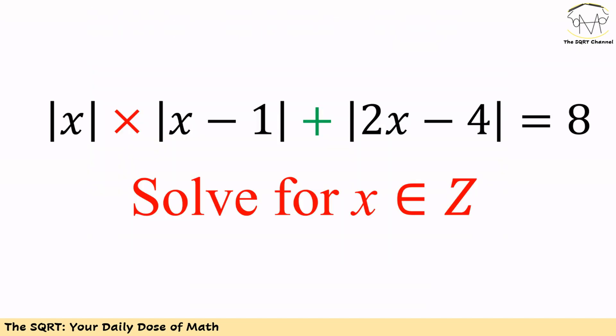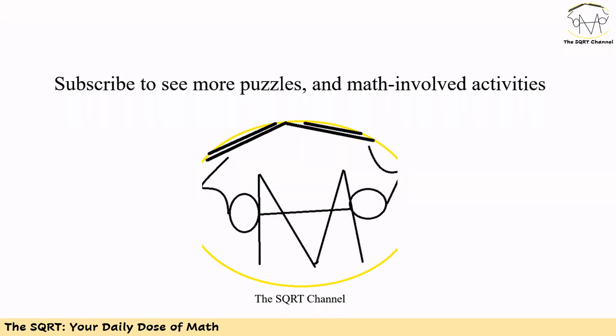To wrap up: we first found the root values for each expression, divided the integers into multiple regions, removed the absolute value signs using the appropriate expression or its negative, simplified and solved the quadratic equations in each region, and verified the results. Thanks for watching — please subscribe to the channel for more math puzzles and activities.